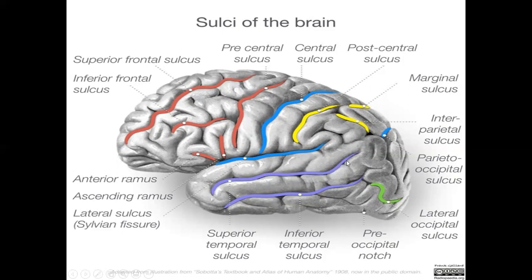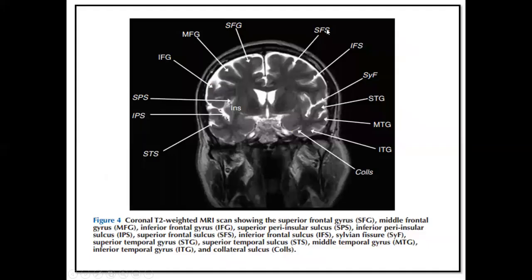The sylvian fissure separates the frontal and parietal lobes from the temporal lobe. Above the sylvian fissure, working superiorly: superior frontal gyrus, middle frontal gyrus, inferior frontal gyrus, with the superior frontal sulcus and inferior frontal sulcus between them. Below the sylvian fissure are the temporal gyri: superior temporal gyrus, middle temporal gyrus, and inferior temporal gyrus, separated by the superior temporal sulcus and inferior temporal sulcus.